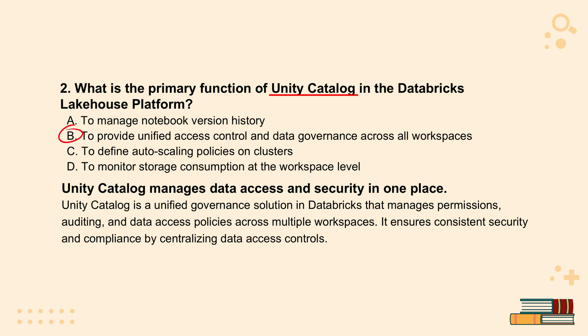The source explanation highlights centralizing control over data access: consistent security policies, easier permission management, simpler audits — all in one spot. If you've dealt with fragmented governance before, this unified approach is a huge win. It cuts down complexity massively. So the exam sees central control as the defining thing for Unity Catalog: managing access and security in one place. That's the key takeaway — centralized governance.